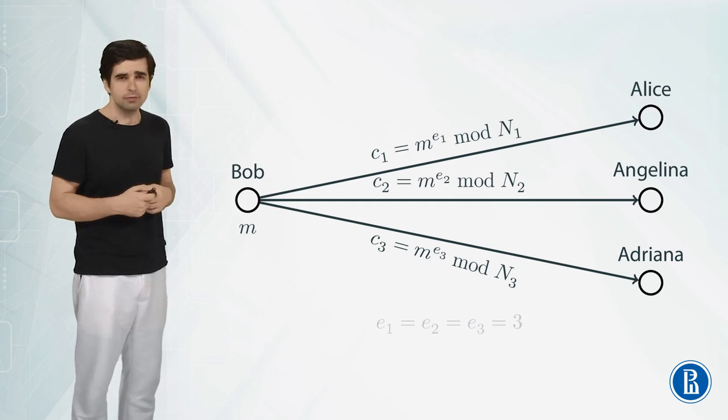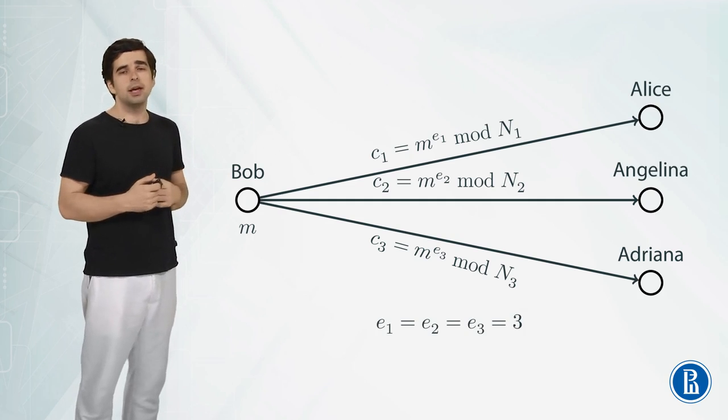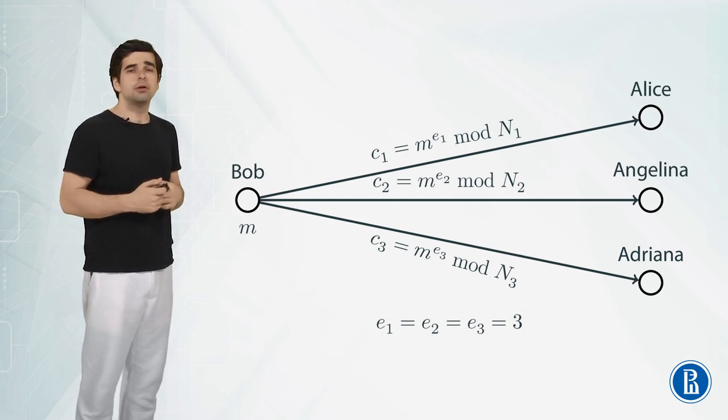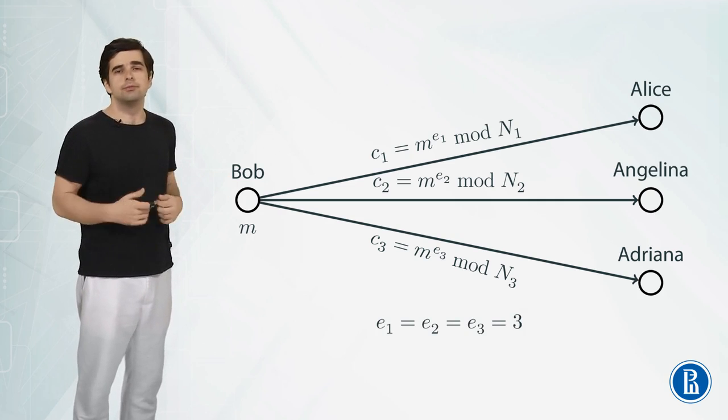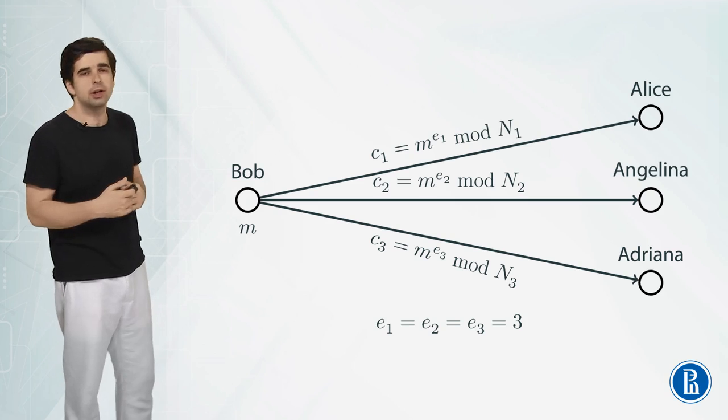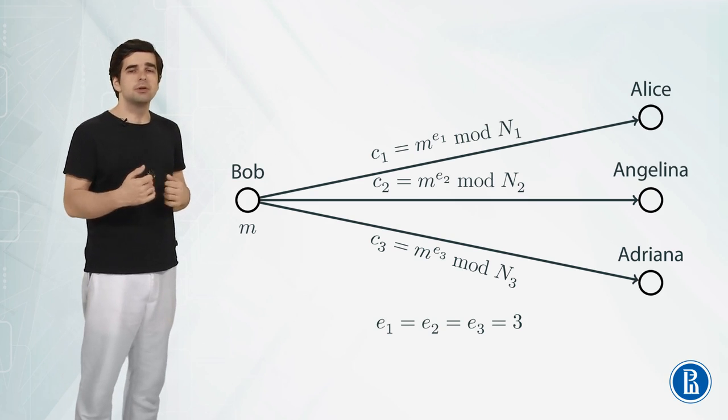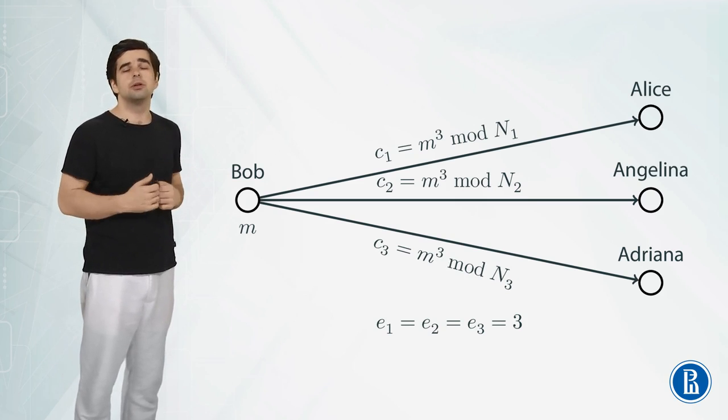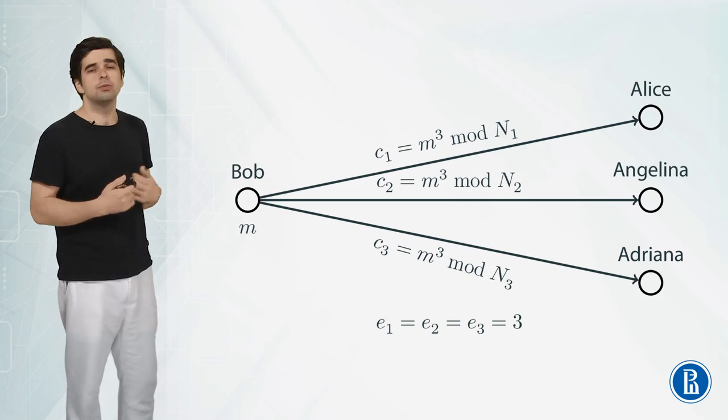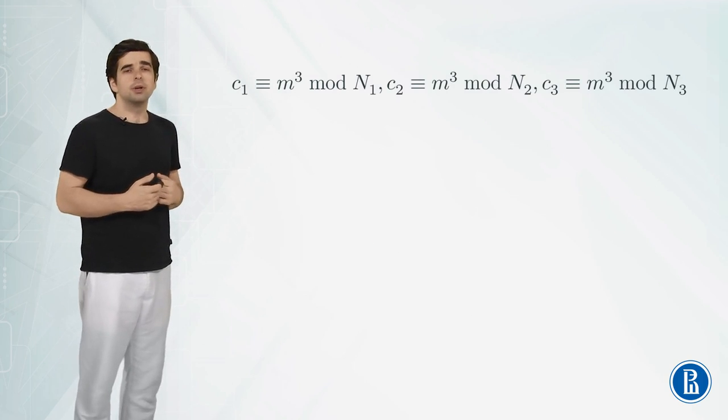So in our simplified case we assume that all e₁, e₂ and e₃ turn out to be equal to 3. This potentially could happen and what happens in this case is that c₁ is equal to m³ modulo N₁, c₂ is equal to m³ modulo N₂ and c₃ is equal to m³ modulo N₃.